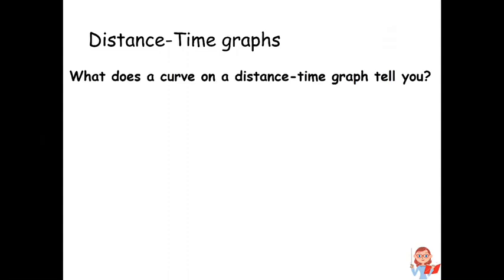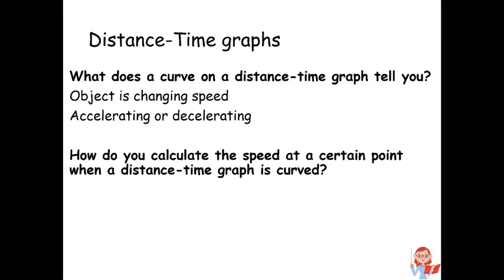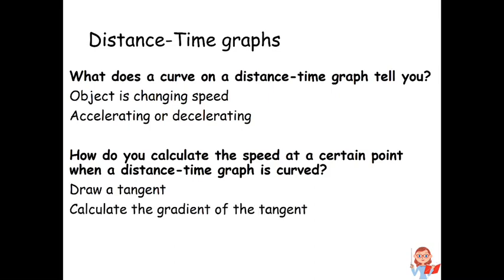What does a curve on a distance-time graph tell you? That the object is changing speed, which means it's accelerating or decelerating. How do you calculate the speed at a certain point when a distance-time graph is curved? You draw a tangent at that point and then you calculate the gradient of the tangent.